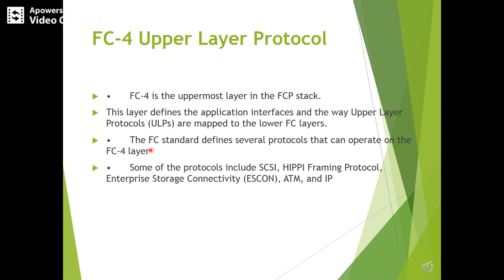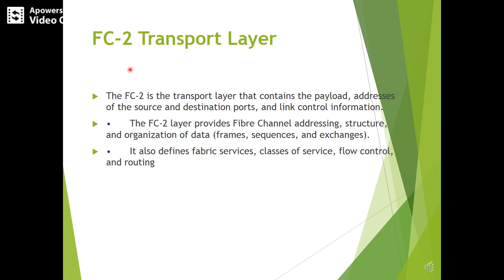FC4 defines the application interfaces and the way upper layer protocols are mapped to the lower FC layers. FC4 defines a set of protocols that can operate on the FC4 layer, such as SCSI, HIPPI framing protocol — that is high performance peripheral interface protocol — ESCON, which is enterprise storage connectivity, ATM, which is asynchronous transfer mode, and IP. Next is FC2, the transport layer.